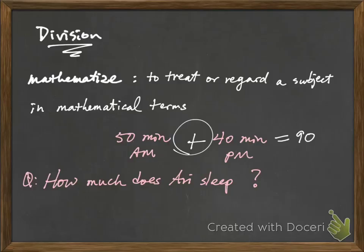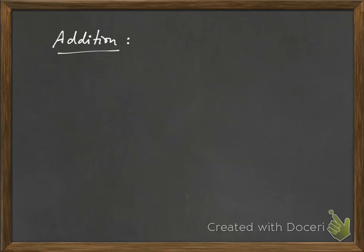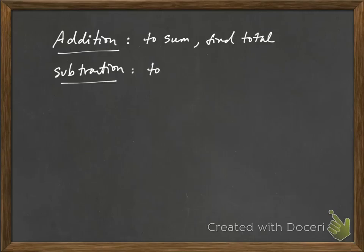Making these mathematical representations require an understanding of the four fundamental arithmetic operations: addition, subtraction, multiplication, and division. In general, we take addition to mean sum and to find total. We use subtraction to take away things or to find the differences.